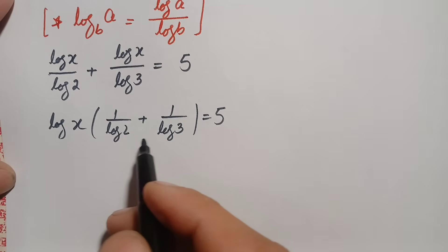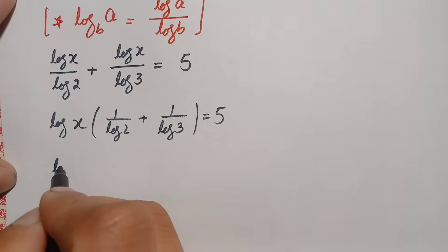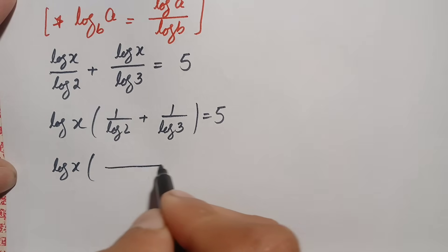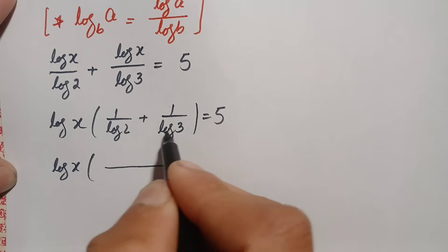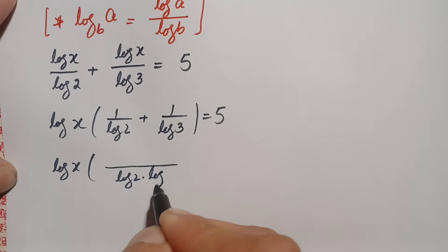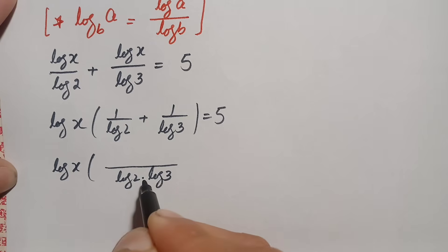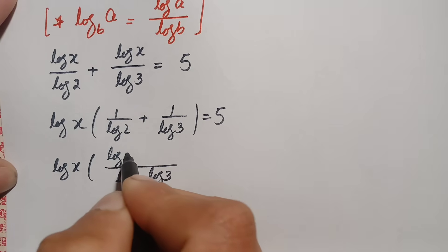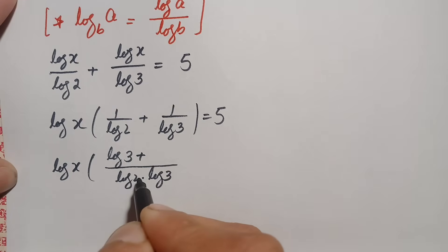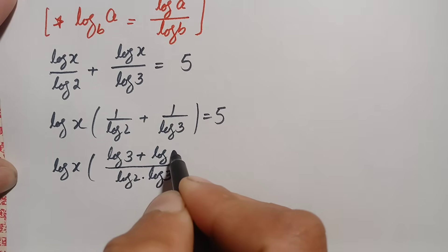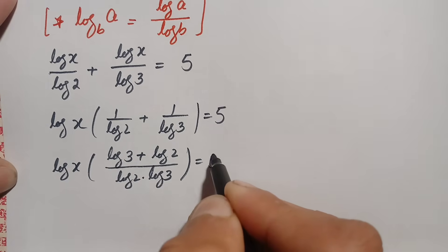We take the sum of these two terms. The common denominator of the two fractions is log of 2 times log of 3. Dividing that by log of 2 gives log of 3, and dividing by log of 3 gives log of 2. So the numerator becomes log of 3 plus log of 2, giving us log of x times (log of 3 plus log of 2) divided by (log of 2 times log of 3) is equal to 5.